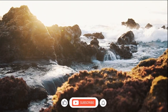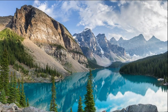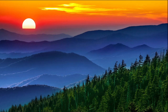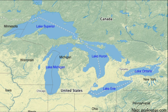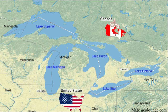Major mountain ranges include the Rocky Mountains in the western part of North America and the Appalachian Mountains in the eastern part. The Great Lakes, shared between the United States and Canada, are the largest group of freshwater lakes in the world and are a significant feature of North America.